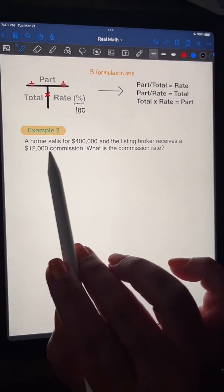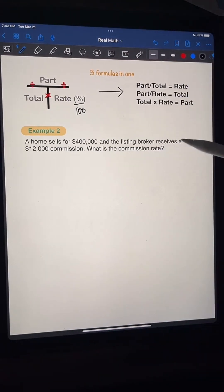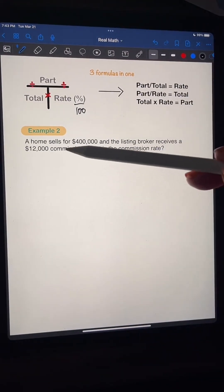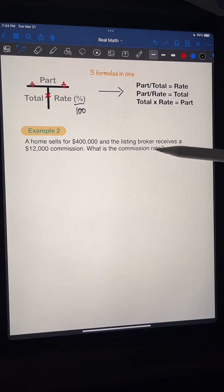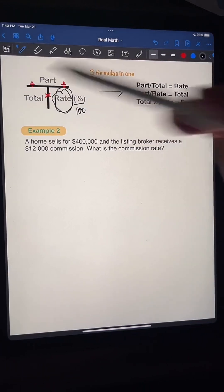All right. So here we go. A home sells for $400,000. And the listing broker receives a $12,000 commission. What is the commission rate? Okay? So they're asking for this. This is what they want to know. So we have this and this. So now we just divide.